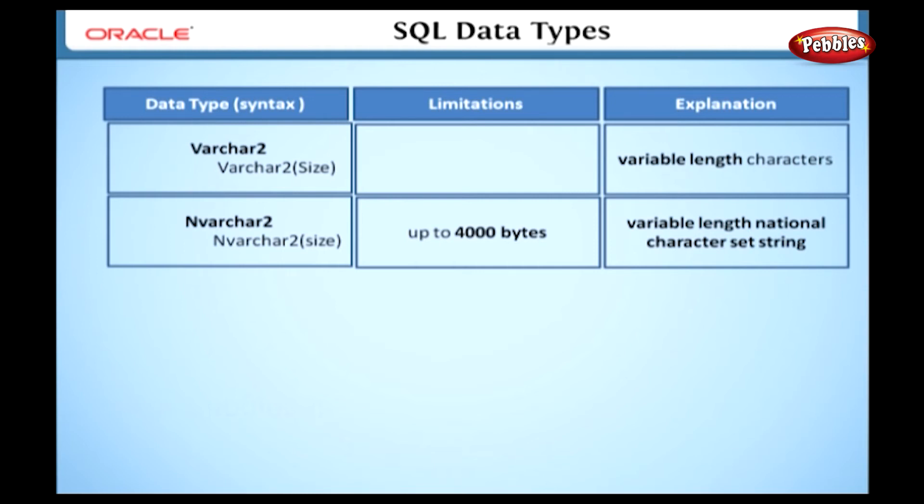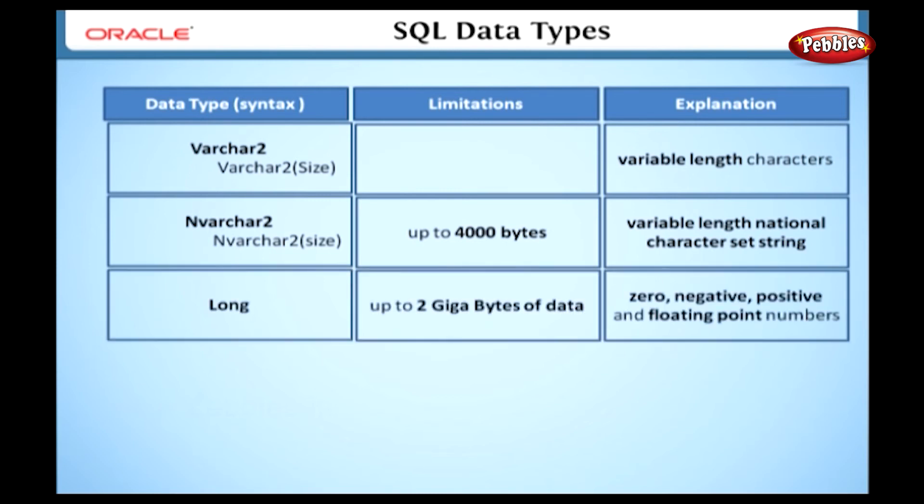NVARCHAR2. It is also like VARCHAR2, but we can store variable length national character set strings. It supports different sets of characters from different nations. Here we have to specify the size in bytes. We can store up to 4,000 bytes.